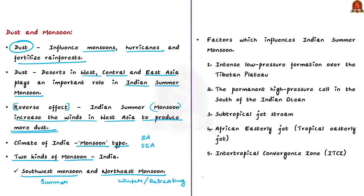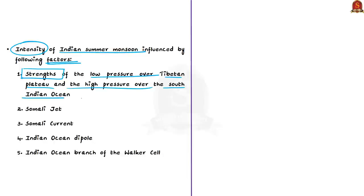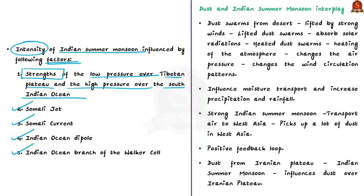When it comes to the Indian summer monsoon, five important factors influence its onset: intense low pressure formation over the Tibetan plateau; a permanent high pressure cell south of the Indian Ocean; the subtropical jet stream; the African Easterly jet; and the Intertropical Convergence Zone. The intensity of the Indian summer monsoon is influenced by the strength of low pressure over the Tibetan plateau, strength of high pressure over the South Indian Ocean, the Somali jet, Somali current, Indian Ocean Dipole, and the Indian Ocean branch of the Walker cell.